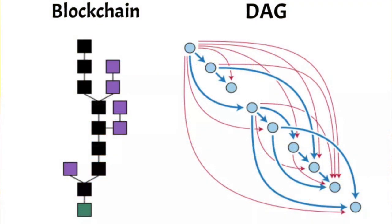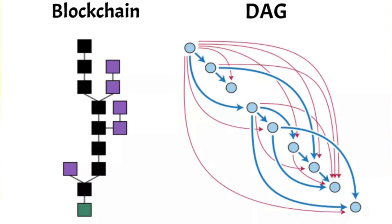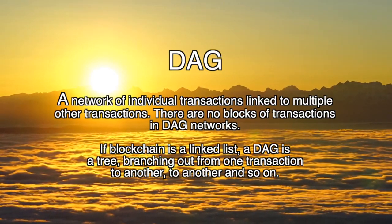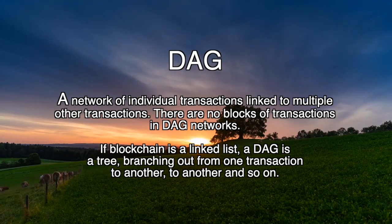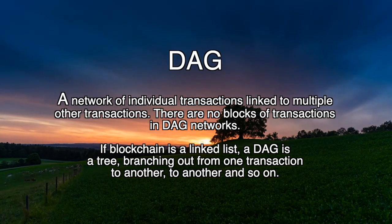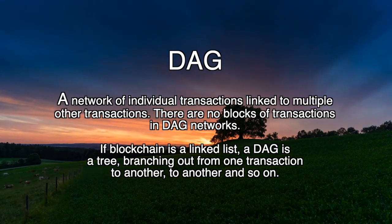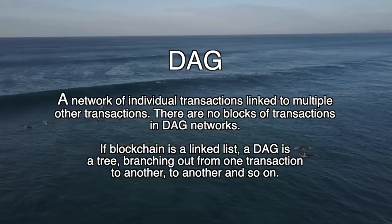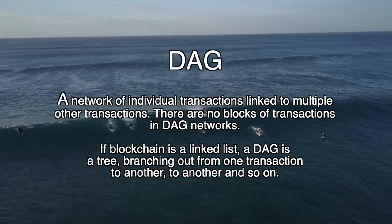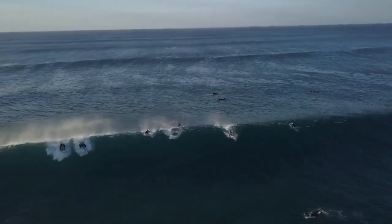By comparison, a DAG is a network of individual transactions linked to multiple other transactions. There are no blocks of transactions in DAG networks. If blockchain is a linked list, a DAG is a tree of some sort, branching out from one transaction to another and so on.